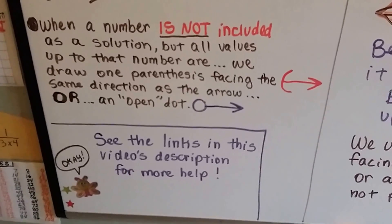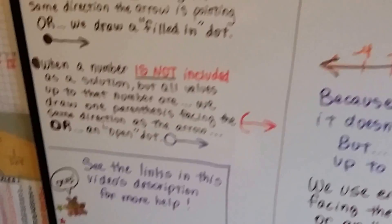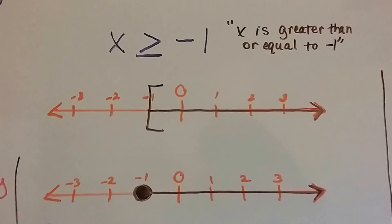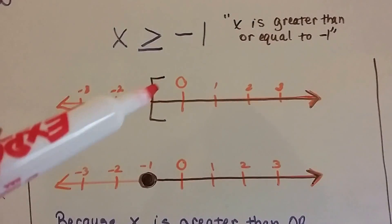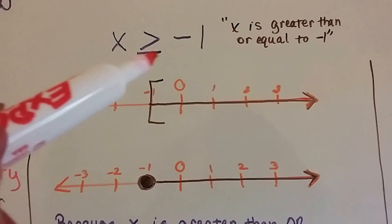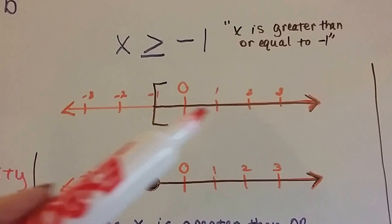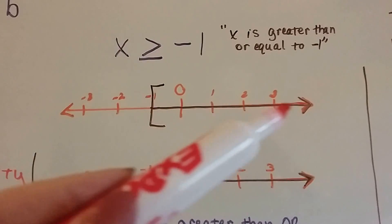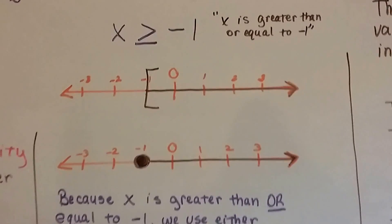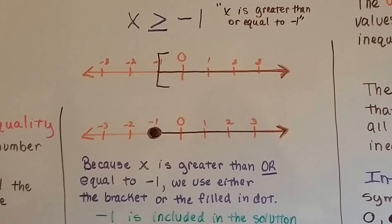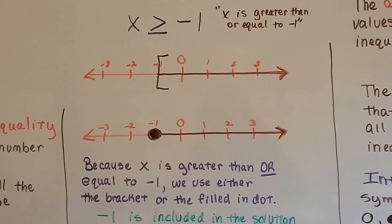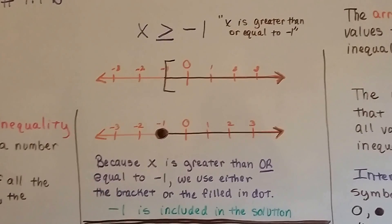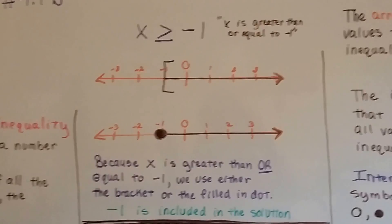Make sure you check this video's description for other videos that can help you. So, look at what we've got here: x is greater than or equal to negative 1. We can draw it as either with the bracket or the dot. The bracket means that negative 1 is included because it says 'or equal to,' and the filled-in dot means it's included. We draw the arrow showing the direction of all the included solutions. Because x is greater than or equal to negative 1, we use either the bracket or the filled-in dot. Negative 1 is included in the solution because of the 'or equal to' part.